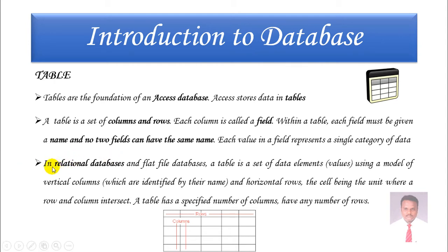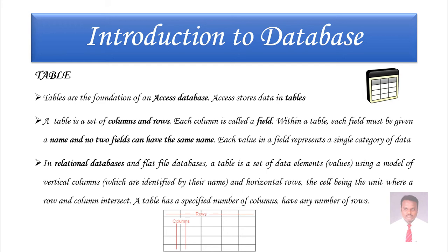In a relational database, the flat file is a table. A table is a set of data elements using a model of vertical columns and horizontal rows, with the cell being the unit where the row and column intersect. Columns we call fields and rows we call records. Here you can see these are the columns and these are the rows. A table consists of rows and columns. The cell is the intersection point of a row and a column.